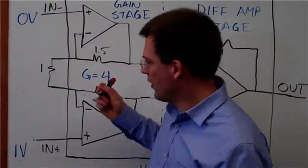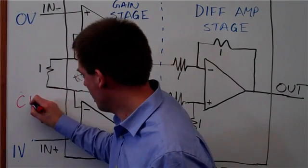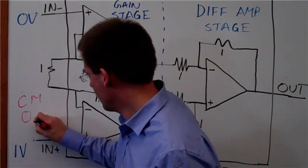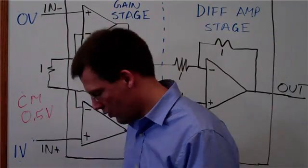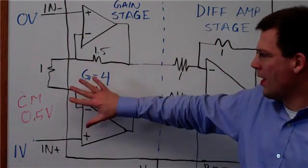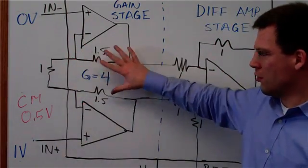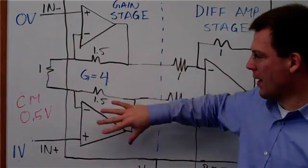So I have a one volt differential signal and I have a 0.5 volt common mode signal. So the average of these two signals is 0.5. And we'll have to remember this because this will be useful to remember. So now these signals go through my first stage. So I gain up.